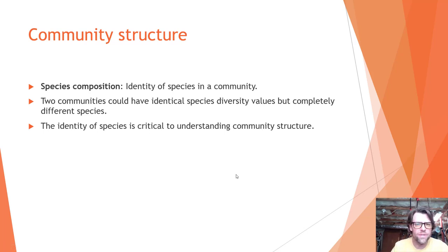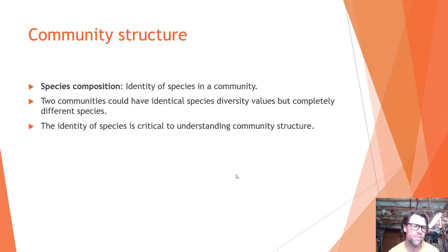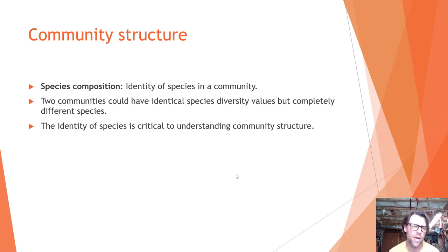Species composition refers to the identity of species in a community. Two communities could have identical species diversity values but completely different species. This is really important — one community could be a really impacted stream with three species of tolerant organisms, while another could be a high-quality stream with three different species entirely. The identity of species is critical to understanding community structure, which is one reason I wanted you to use iNaturalist — to expand your ability to identify species.